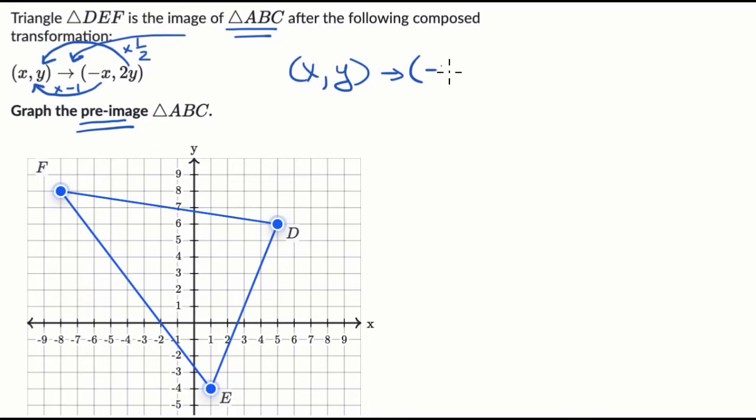Or another way to think about it is, if we perform the following transformation, the reverse transformation, where you take the negative of the X and you take half of the Y, and we perform this on DEF, we should go back to ABC. And we can verify that. Once we think we have ABC, we can do the original transformation and see what happens.